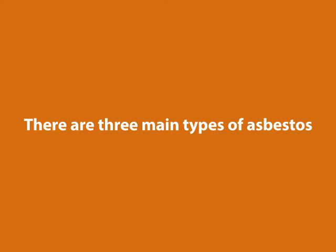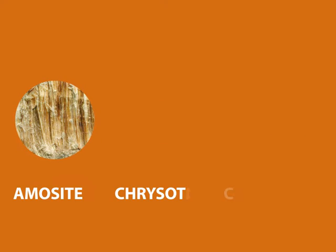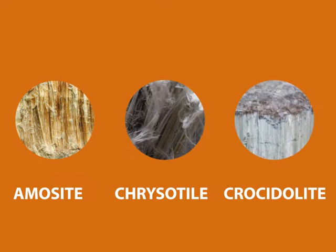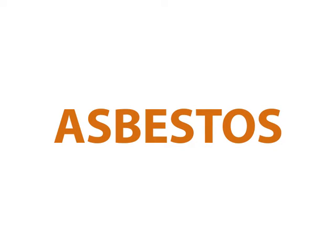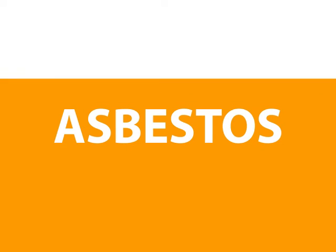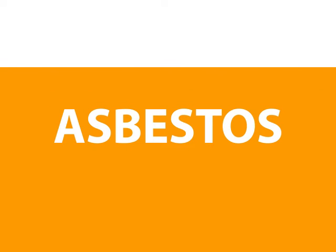There are three main types of asbestos. They are chrysotile, amosite and crocidolite. Although generally recognisable by their colour, identification of asbestos cannot be made by colour alone, as it was usually mixed with other ingredients to change its appearance.